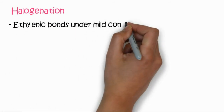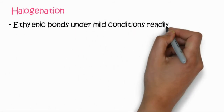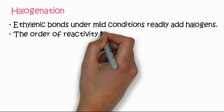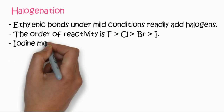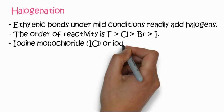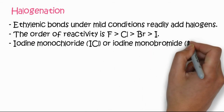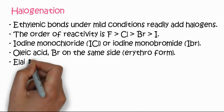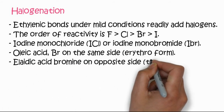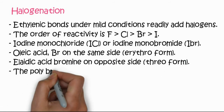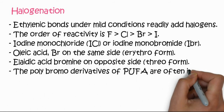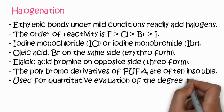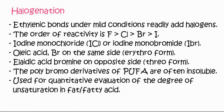The next reaction is halogenation. The ethylenic bond under mild conditions readily undergoes halogenation. The order of reactivity is fluorine, then chlorine, then bromine, then iodine. Iodine monochloride or iodine monobromide are usually used for halogenation. Oleic acid with bromine on the same side is called erythro form; bromine on the opposite side is called threo form. Polybromo derivatives of polyunsaturated fatty acids are insoluble in water and used for quantitative evaluation of the degree of unsaturation in lipids.